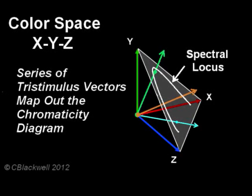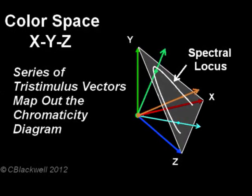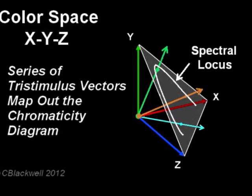Contained within this border is the full gamut of colors we are capable of seeing. This color map is called the chromaticity diagram.